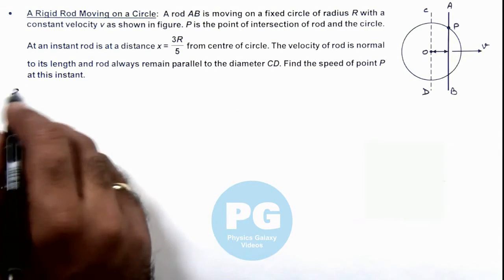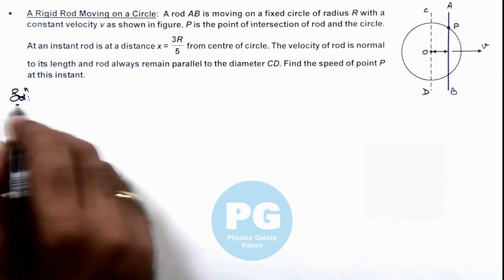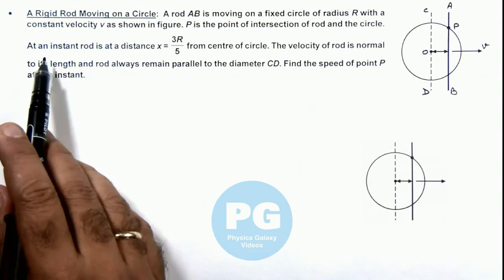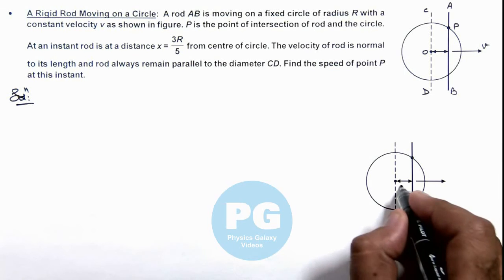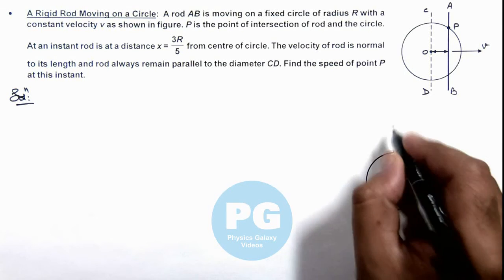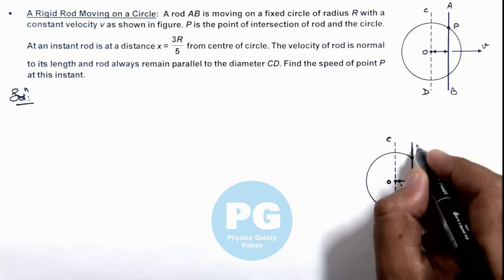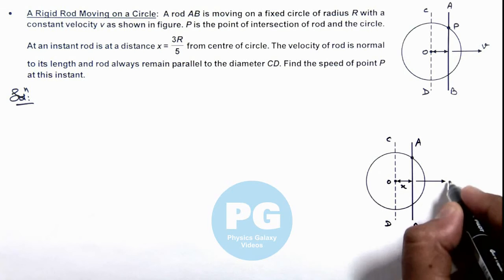Now in this situation to further process, let's have a look at this picture where this distance is x and parallel to diameter CD the rod AB is moving with a speed v.